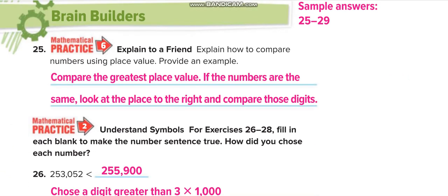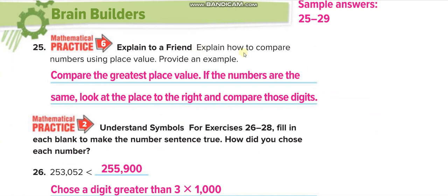Next: explain to a friend how to compare numbers using place value. As I told you, start by comparing the greatest place value first. Here, two versus two, five versus five, five versus three — we reach a difference: five is greater than three. If the digits at the greatest place value are the same, look at the place to the right and compare those digits.